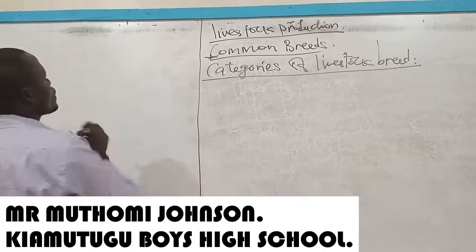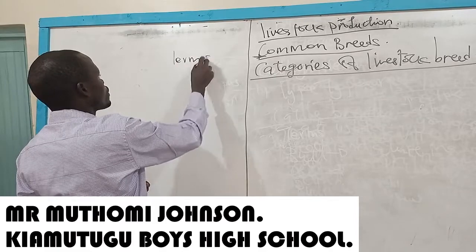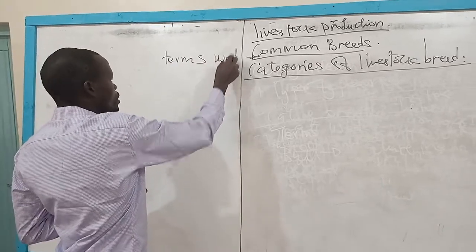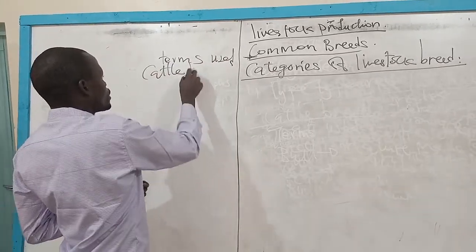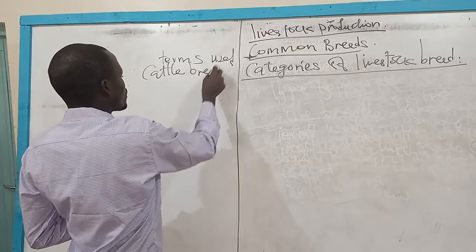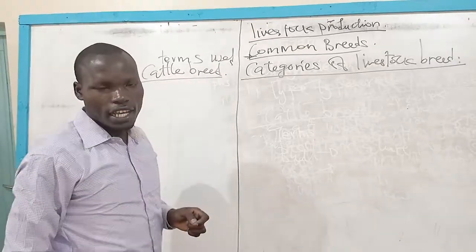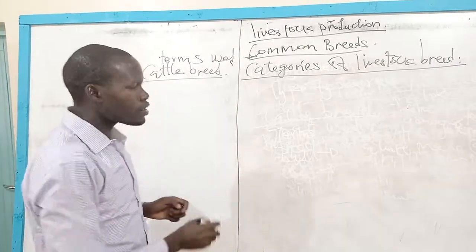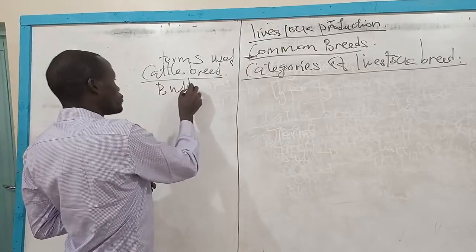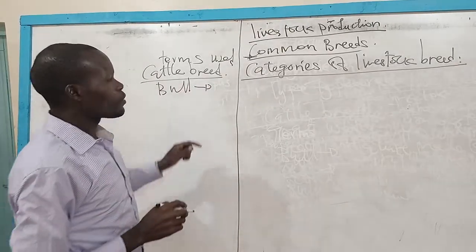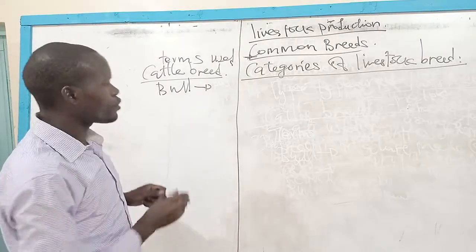In our previous lesson we looked at the terms which are being used in cattle keeping. Some of the terms that we looked at: one, a term like a bull, whereby we say a bull is a mature male cattle.